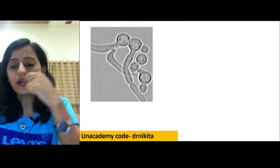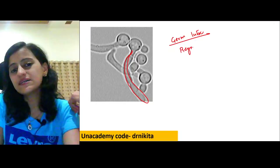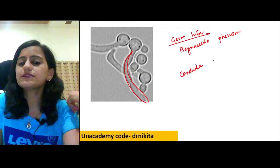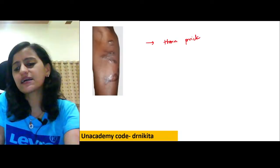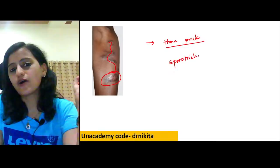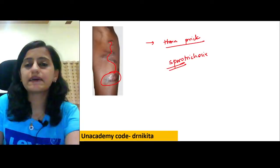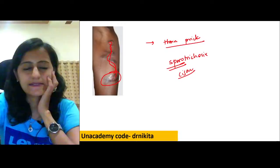Germ tube formation — also called the Reynolds phenomenon — is seen with Candida albicans. If a gardener has a thorn prick followed by noduloulcerative lesions spreading along the lymphatics, this is sporotrichosis, which has cigar-shaped yeast and spreads along lymphatics.